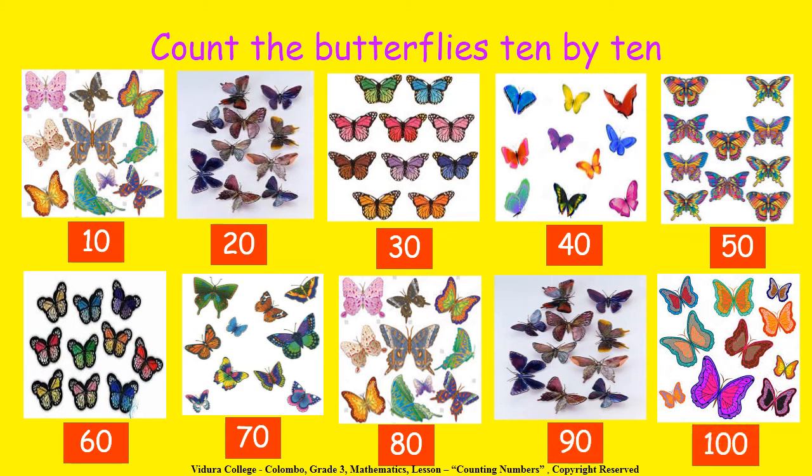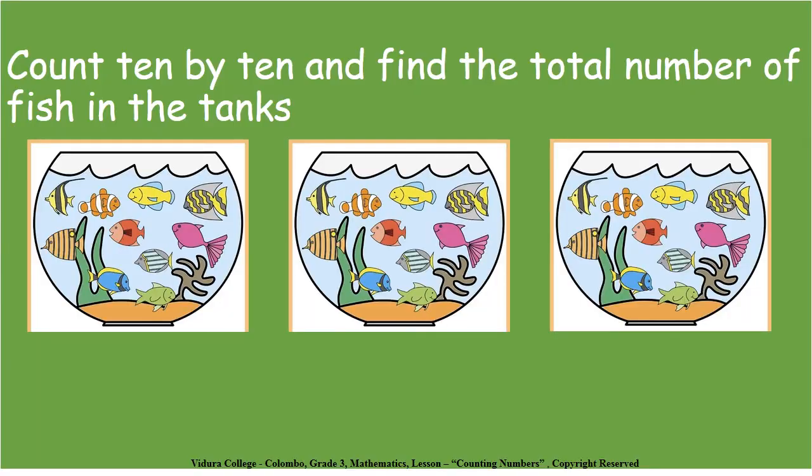There are 100 butterflies in this picture. Count 10 by 10 and find the total number of fish in the tanks. There are 100 fish in the tanks.